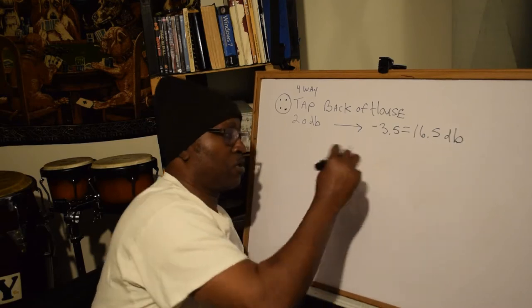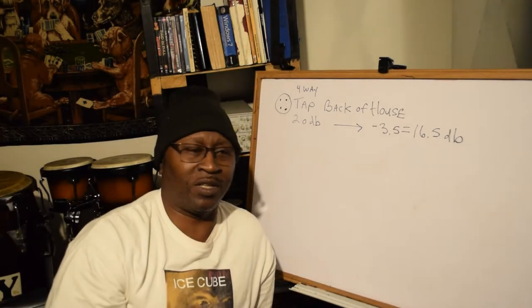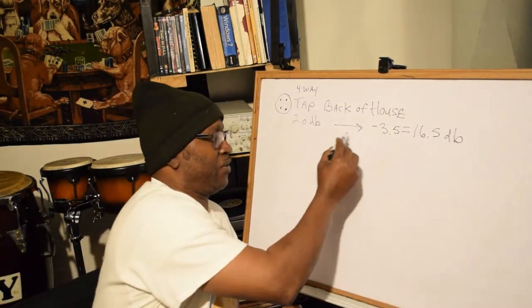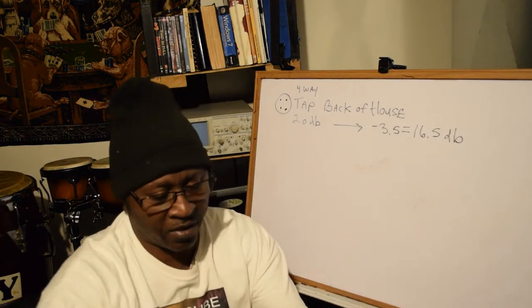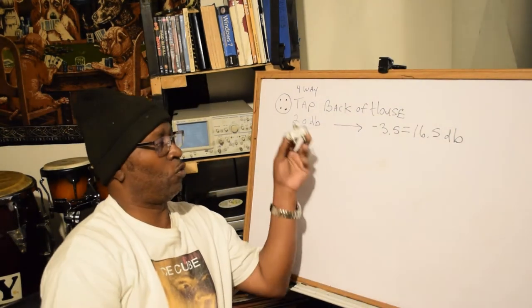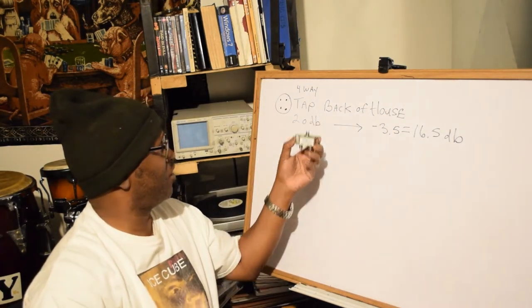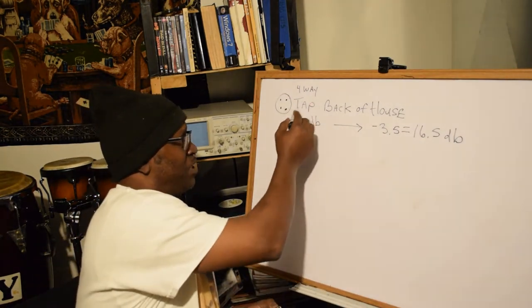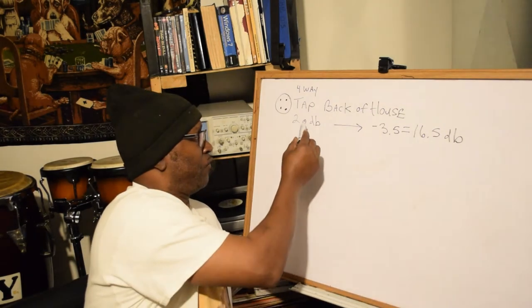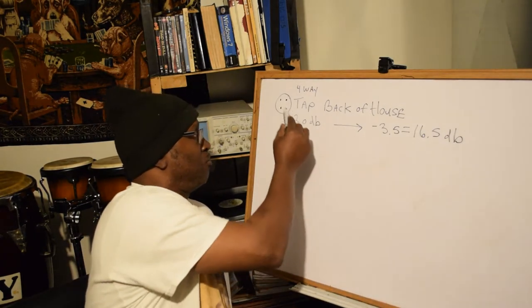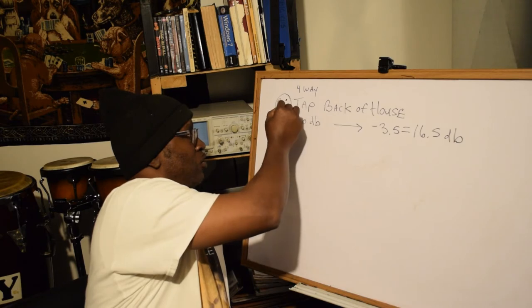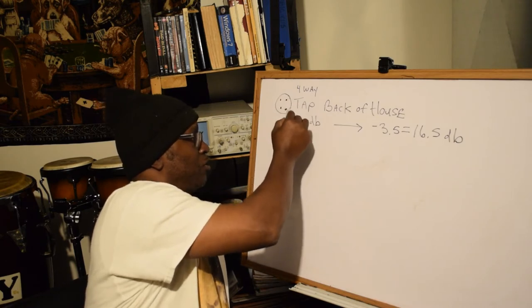So that would be 16.5 dBs that would come out of this splitter here. Now when it comes down to a tap in the back of somebody's house, if it's 20 dBs coming out, it's 20 dBs coming out on each one: 20, 20, 20, 20.